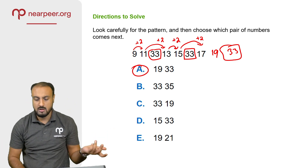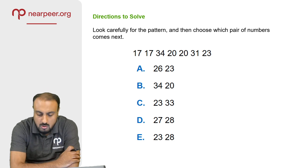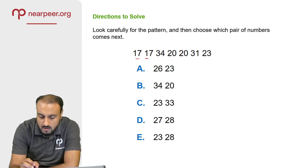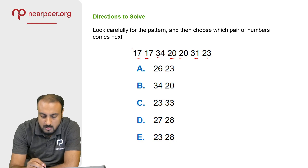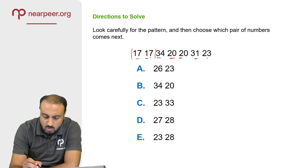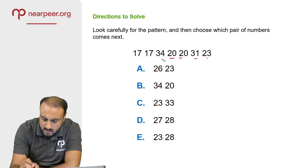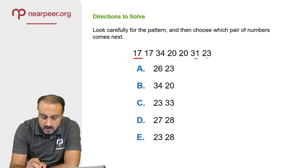A simple answer. Now look carefully at the next pattern. The numbers are 17, 34, 20, 31. So this whole set — 34 and 31 — these are dummy numbers. We ignore them. The case is 17: a number repeats, then 17, then 34.